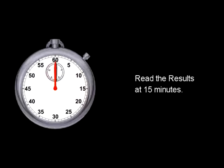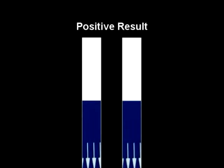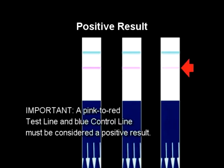Read the results at 15 minutes. Some positive results may appear sooner. The presence of a pink to red test line along with a blue control line means that the test is positive for respiratory syncytial virus. Be sure to look at the test line carefully — if you see a very faint pink test line and a blue control line, you must report the result as a positive.